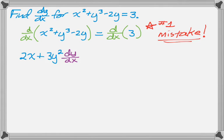And then the derivative of negative 2y is negative 2, but again, the chain rule gives us a dy/dx. And then on the right-hand side, the derivative of constant is zero, so don't forget that.